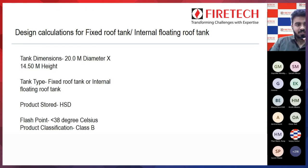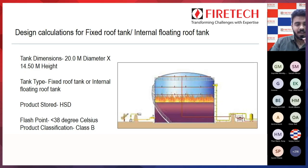We have considered some tank dimensions. The tank diameter we are considering is 20 meters. The calculations are for a fixed roof or internal floating roof tank. The product stored is HSD, with a flash point less than 38 degrees Celsius, and this product classification comes under Class B type of fuel.